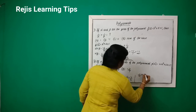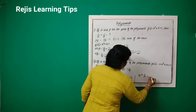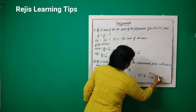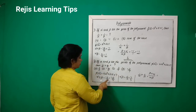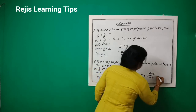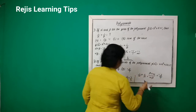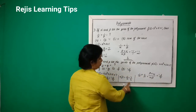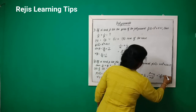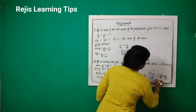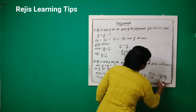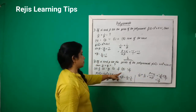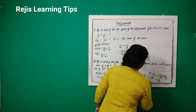1/α + 1/β — taking LCM, alpha·beta — gives (β + α)/(α·β). Beta plus alpha equals -3/4, divided by alpha·beta which is 7/4, so multiply by 4/7. The 4s cancel, giving -3/7. So our answer is D.